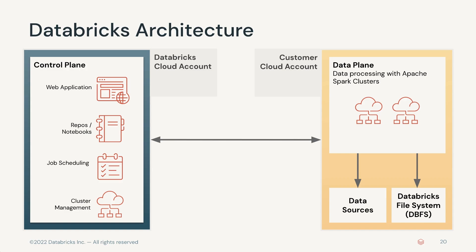The control plane consists of the backend services that Databricks manages in its own cloud account, aligned with the cloud service in use by the customer — AWS, Azure, or GCP. Though the majority of your data does not live here, some elements such as notebook commands and workspace configurations are stored in the control plane and encrypted at rest.